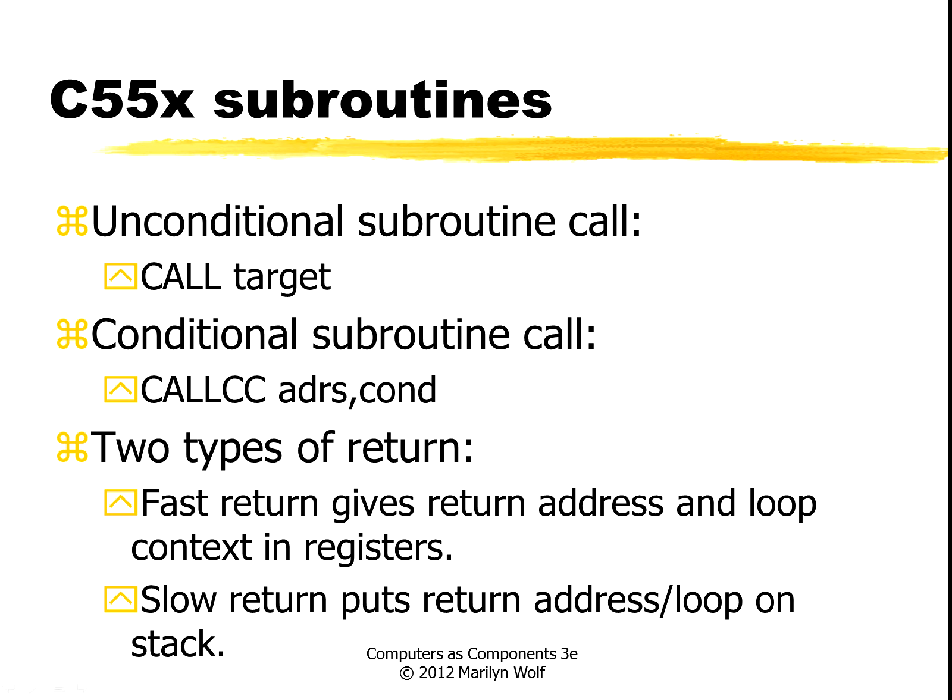Subroutine access is with the call instruction. Conditional subroutine calls can be done with call CC. There are two types of returns: fast return, which gives a return address and loop context in registers, and slow return, which uses the stack.